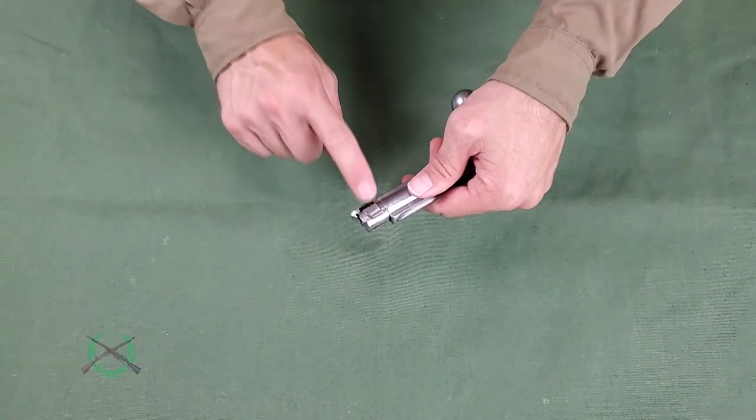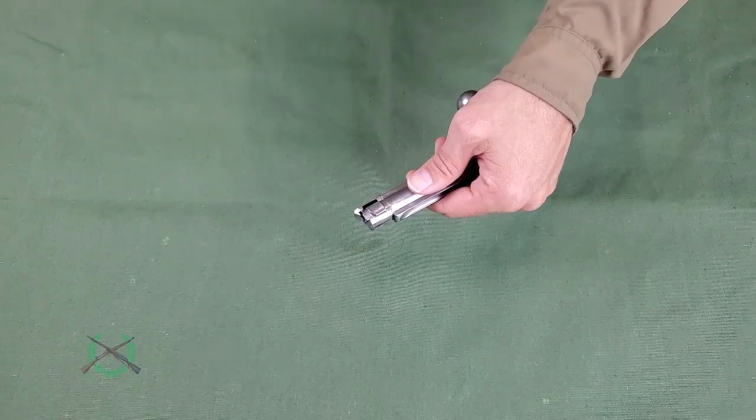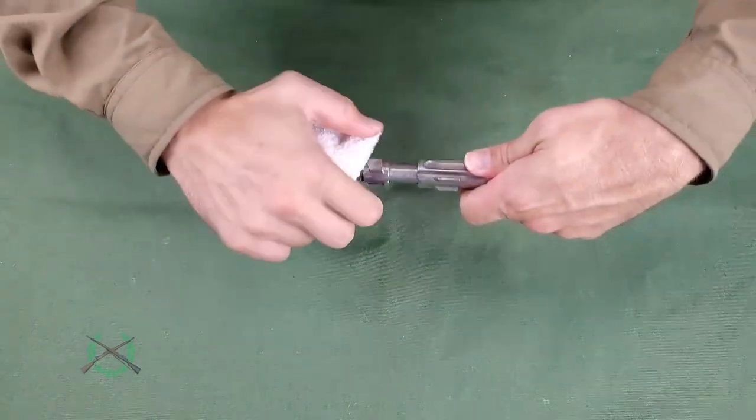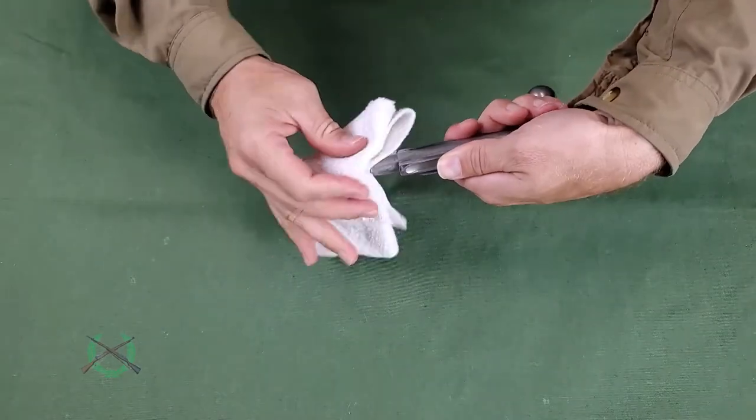The bolt head and extractor can then be removed from the bolt body. This may take some force and the bolt head will rotate clockwise as it comes out. The cloth may be useful in doing this.